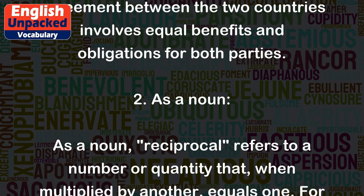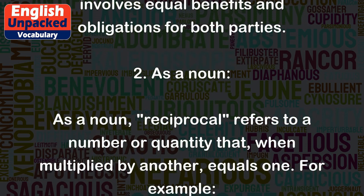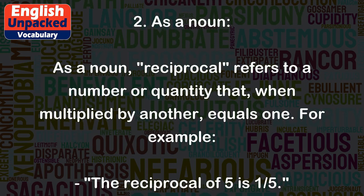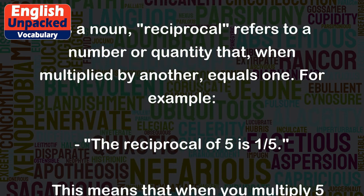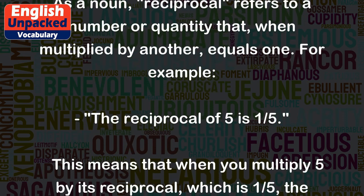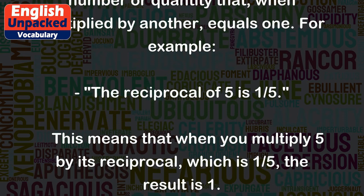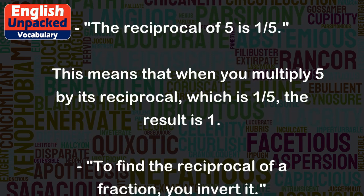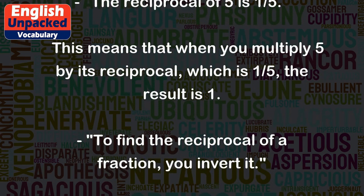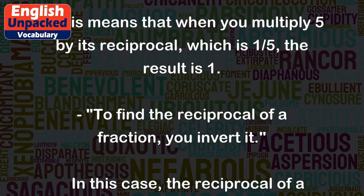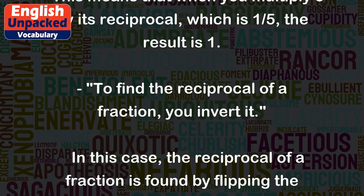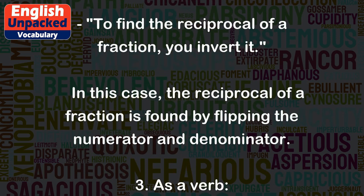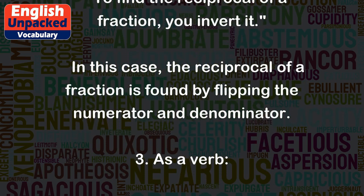As a noun, 'reciprocal' refers to a number or quantity that, when multiplied by another, equals one. For example, the reciprocal of five is one-fifth. This means that when you multiply five by its reciprocal, one-fifth, the result is one. To find the reciprocal of a fraction, you invert it by flipping the numerator and denominator.